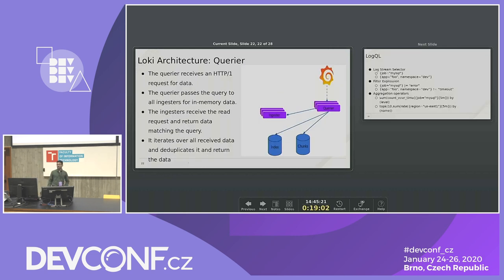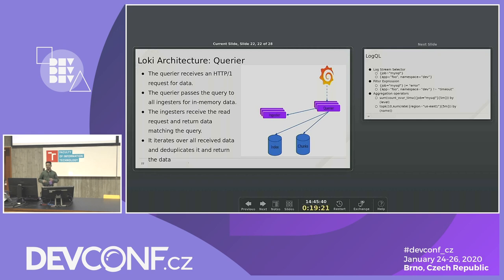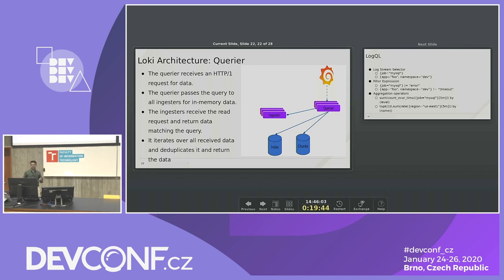The querier is a stateless component that receives HTTP requests for data. It forwards requests to the ingester to get recent in-memory data not yet flushed to storage, and also queries the index for historic data matching the query. Since Loki shards and replicates data to avoid data loss, duplicate results may be returned; the querier deduplicates the data before returning it to the data source.